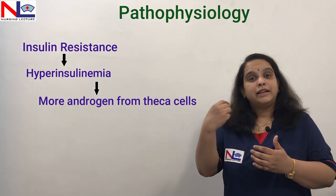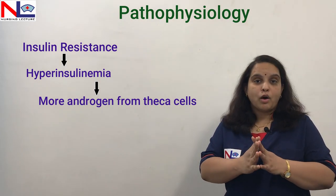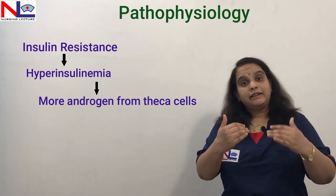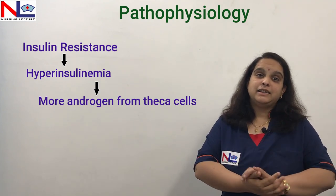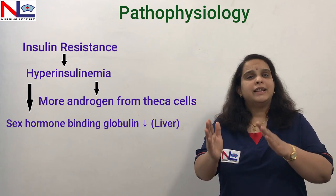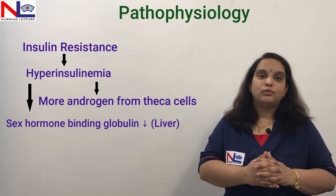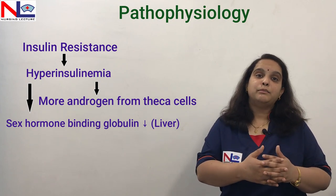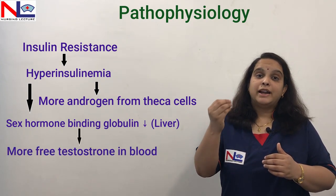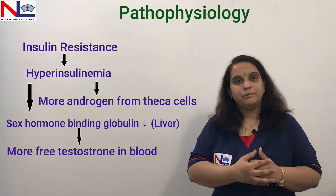But in PCOS, the androgen does not aromatize into estrogen — it remains in androgen form. Additionally, in the liver, the increased insulin decreases the sex hormone binding globulin (SHBG), which is essential for binding androgen. As SHBG production decreases, it cannot adequately bind with androgen, and this results in high levels of free androgen — testosterone — rising in the blood of the woman.